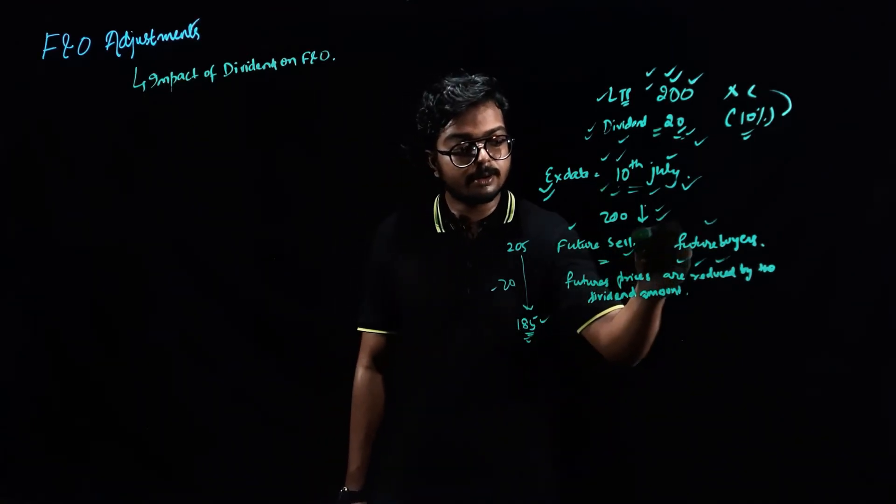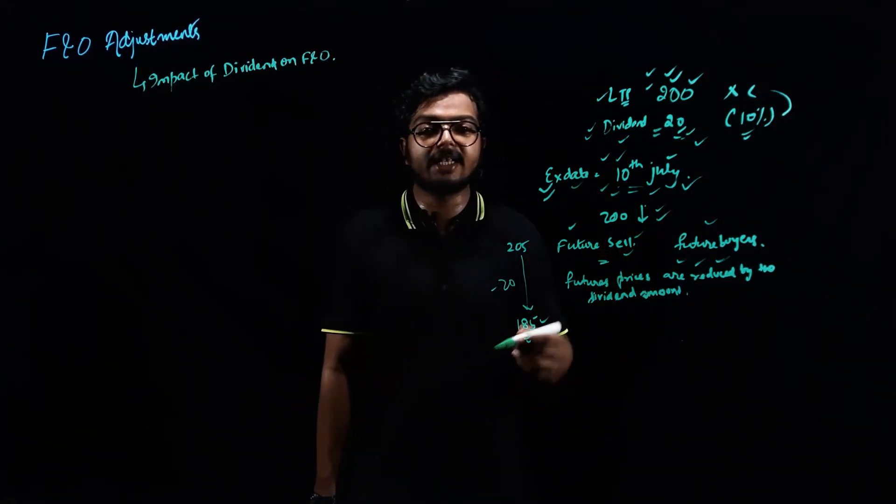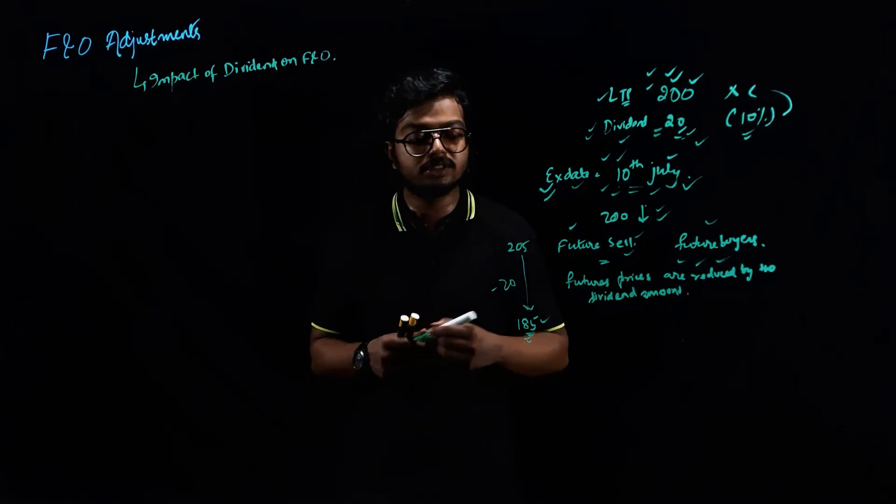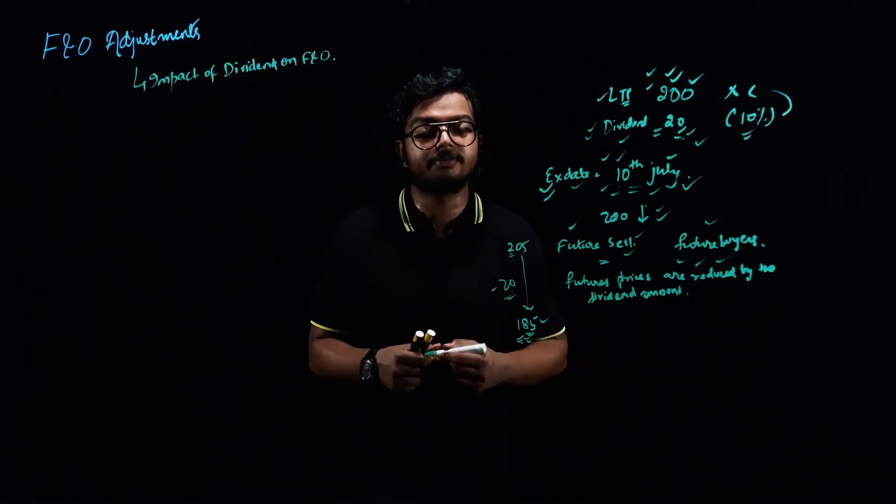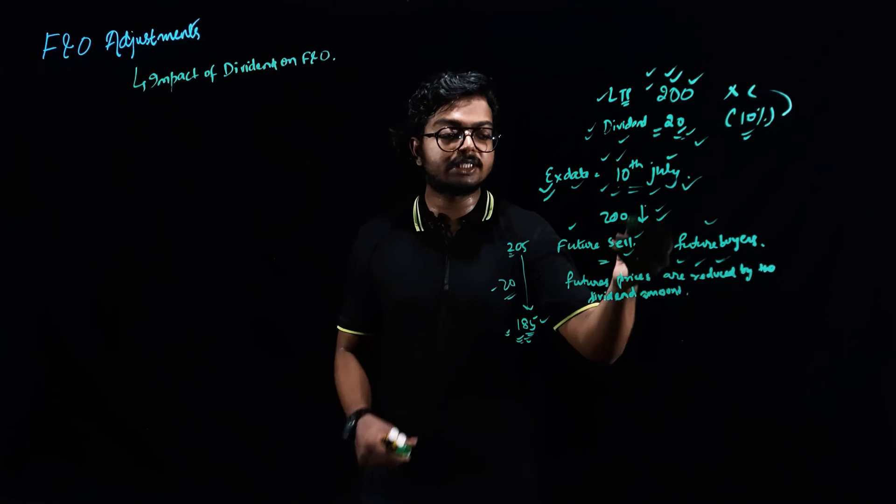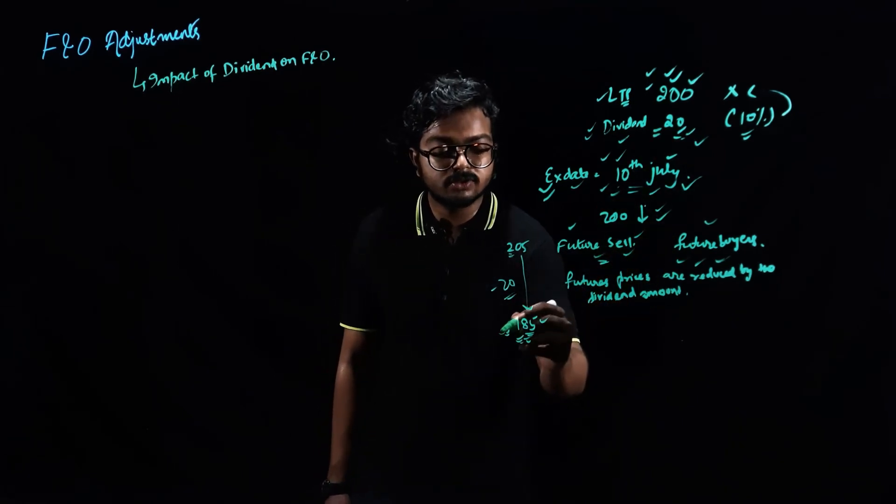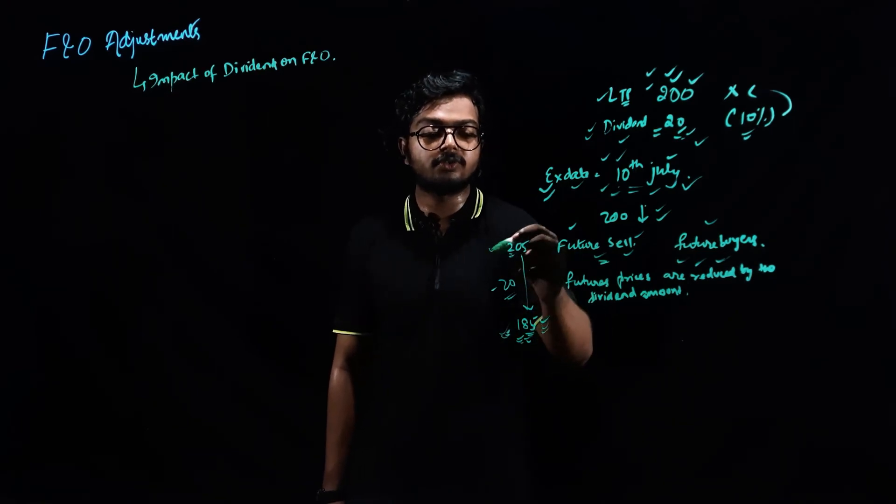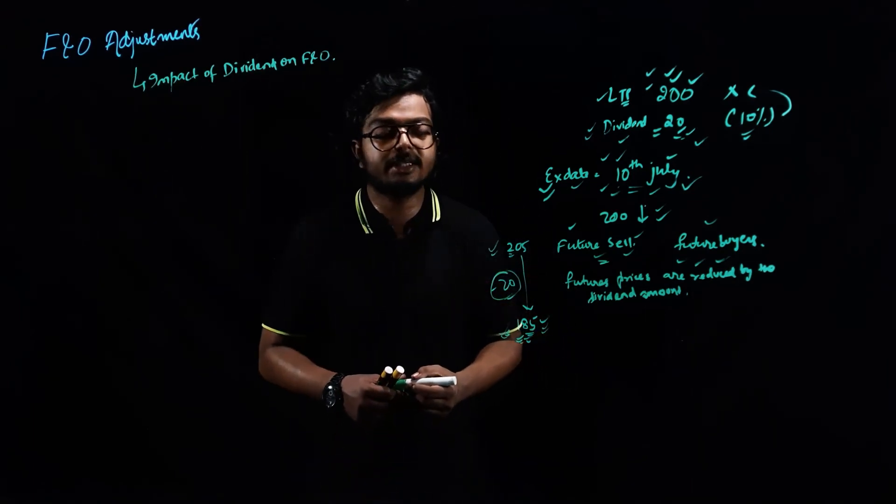So remember this, don't blindly sell futures just because it is on X date. And if you know that the price would be going down, even if it goes down, you would be starting at 185. You won't be starting at 205. Please make a note of it. This is very important. Many people do sell futures just thinking that it would go down, but actually your price would be starting at 185. This is the closing price and this won't be 205. So you won't be gaining this 20 rupees.